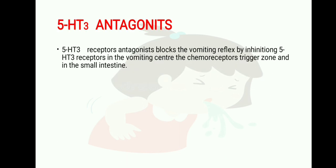5-HT3 antagonists block the vomiting reflex by inhibiting 5-HT3 receptors in the vomiting center, the chemoreceptor trigger zone, and the small intestine. In the 5-HT3 antagonist class, serotonin released in the gut is an important transmitter mediating vomiting.